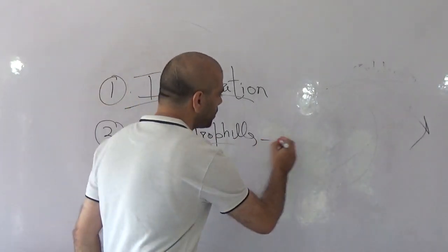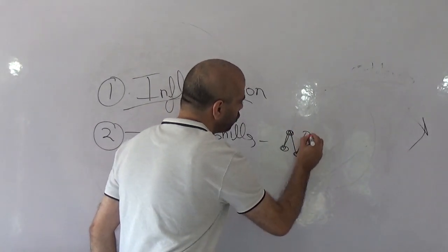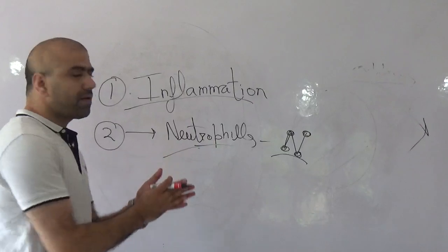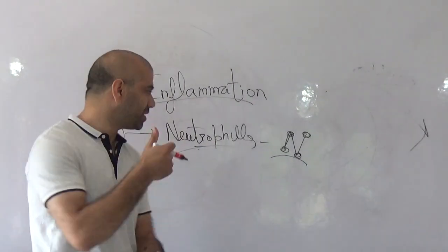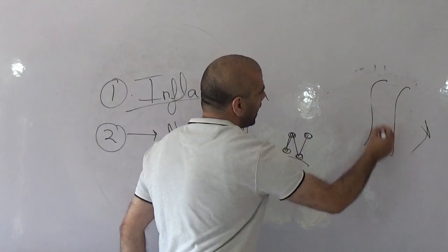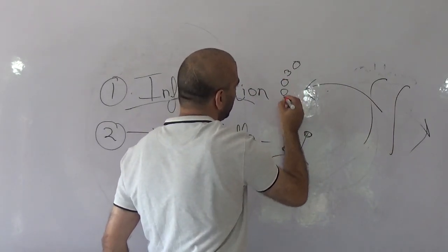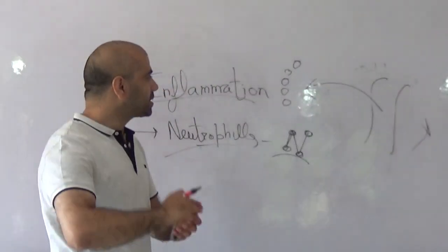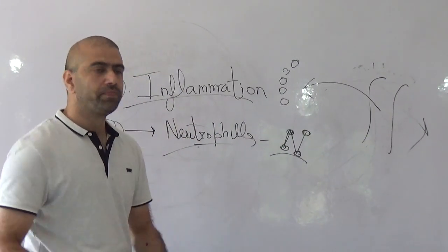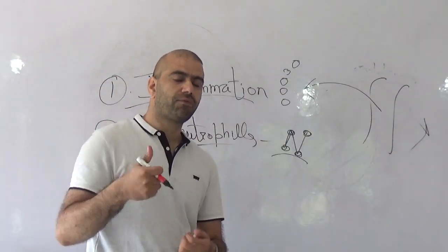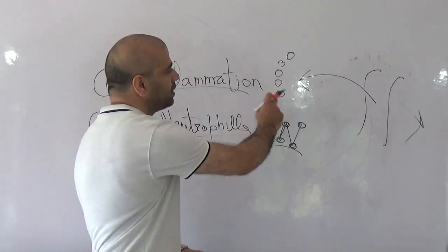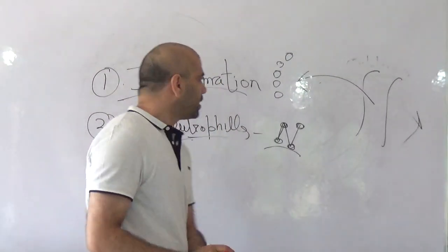Neutrophils are called neutrophils because they stain at a neutral pH. Looking at their nucleus, it has a multi-lobed structure. The lifespan of these cells is very short — only five to seven days. Once the macrophage sends the signal, neutrophils enter the battlefield and act vigorously, releasing a lot of toxins. These toxins not only kill the bacteria but also kill our normal cells — that's why they need to be short-lived. When neutrophils die, they produce pus.